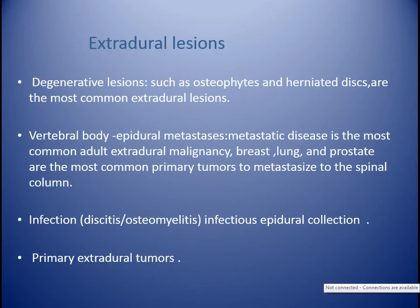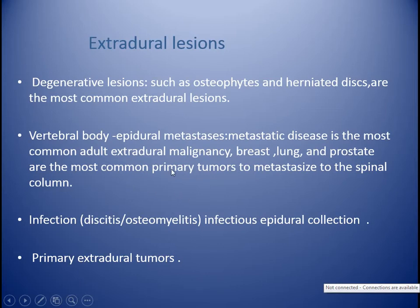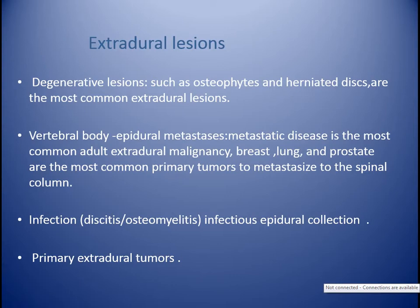Extradural lesions — the most important are degenerative spine, osteophyte, and herniated disc disease. Vertebral body epidural metastasis: metastasis is the most common adult extradural malignancy. Breast, lung, and prostate are the most common primary tumors to metastasize to the spinal column. T1 and STIR images are best to evaluate spinal tumors because fat is hyperintense on T1, and tumor metastasis will cause a focal area of decreased intensity on T1. Other differentials for diffuse T1 decrease include lymphoma, leukemia, and myelofibrosis. We also have infection discitis/osteomyelitis, infection epidural collection, and rare primary extradural tumors.